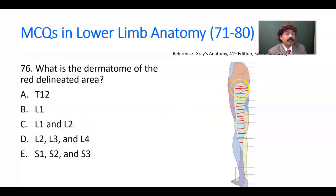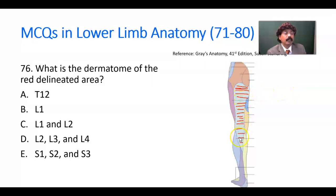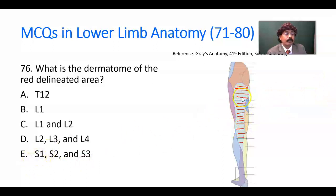This area's sensation is carried by the posterior femoral cutaneous nerve of the thigh. This is one of the longest cutaneous nerves in terms of distribution — another long one is the saphenous nerve. The root value of the posterior femoral cutaneous nerve is S1, S2, and S3.